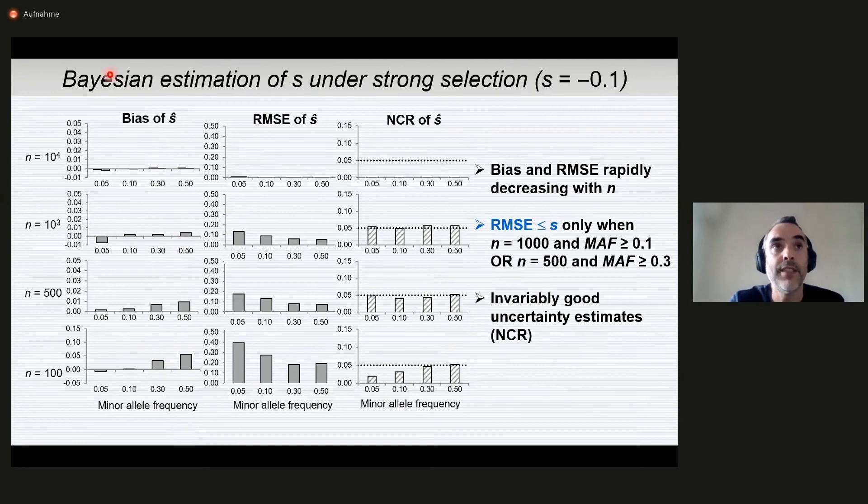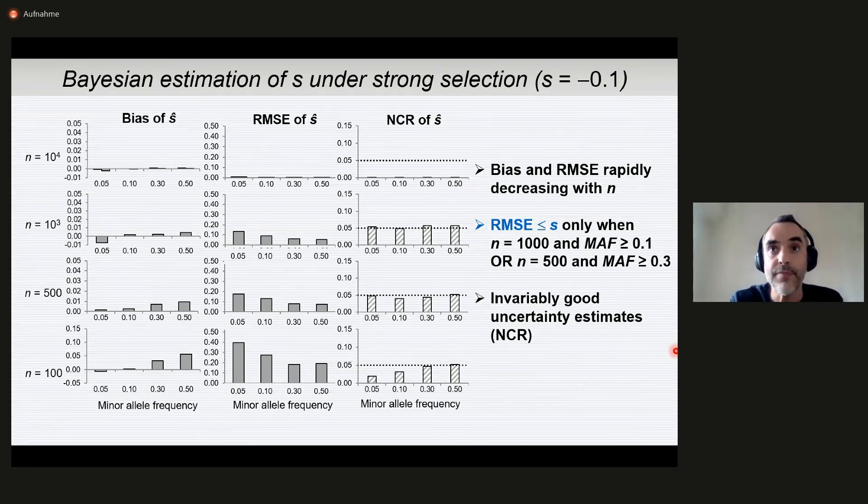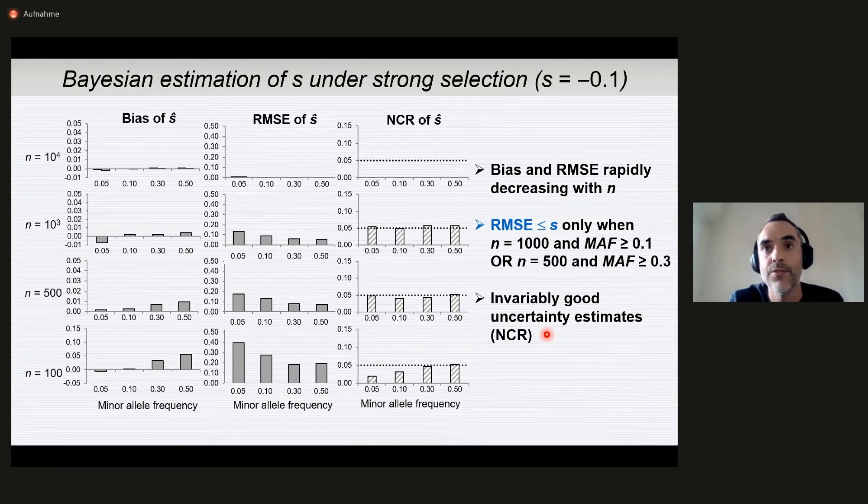Now we are looking here at the errors in the estimation of the selection coefficients themselves. Here is the bias, root mean square error and the credibility interval non-coverage rate. These are different sample sizes from the smallest to the largest and different minor allele frequencies. You can see here that the bias and the root mean square error both rapidly decrease as the sample size increases. However, the root mean square error is only lower than the value of the selection coefficient itself when either we have a large sample and a minor allele frequency larger than 0.1 or a relatively smaller sample for minor allele frequencies larger than 0.3. And again, good news, the credibility interval actual coverage is close to nominal values in all cases.